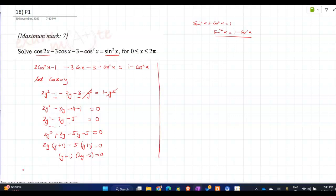So then what does it mean? y is equal to minus 1 or y is equal to 5 by 2. Now re-substitute. cos x is equal to minus 1 or cos x is equal to 5/2. So this is no solution.